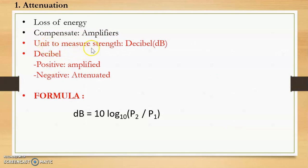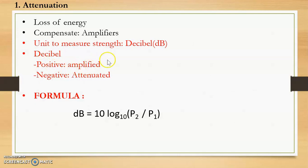The unit used to measure the strength of a signal, or to check if a signal has lost or gained strength, is the decibel. The decibel value measures the strength of one signal at two different points, or the relative strength of two signals. If the decibel value is positive, the signal is amplified; if negative, the signal is attenuated.